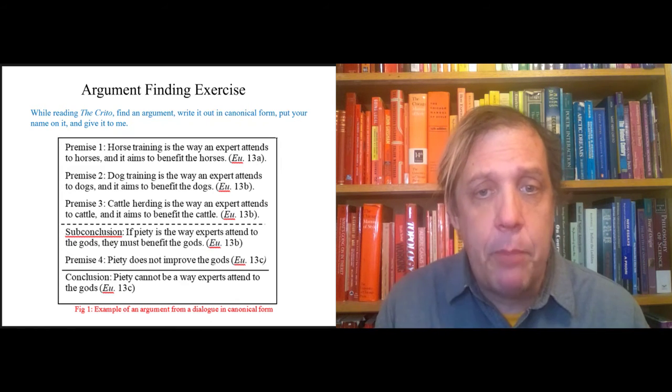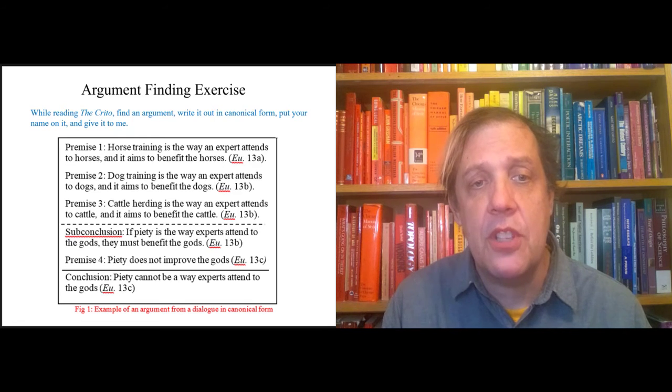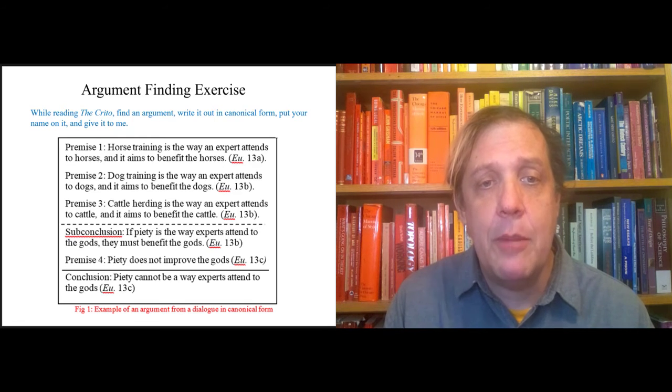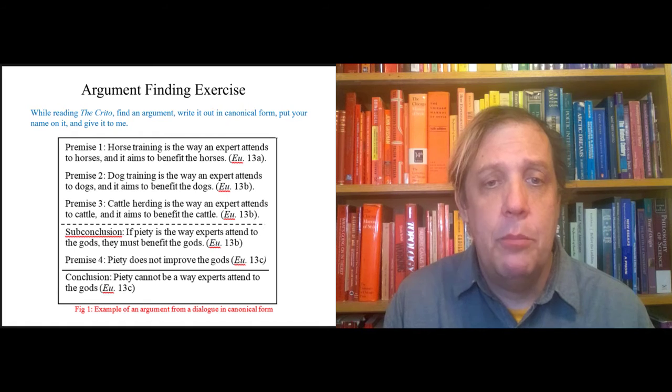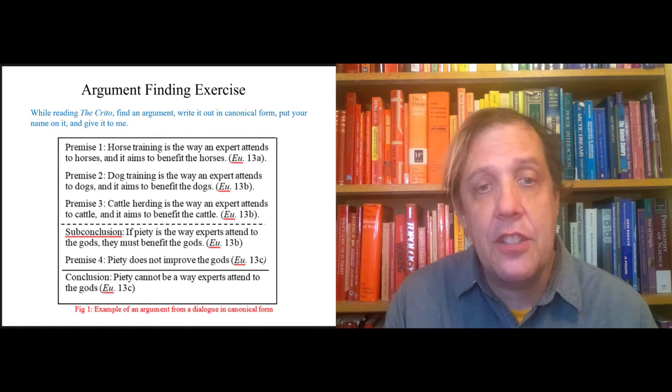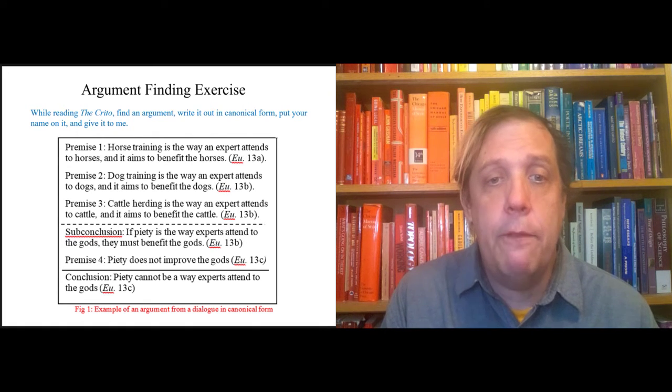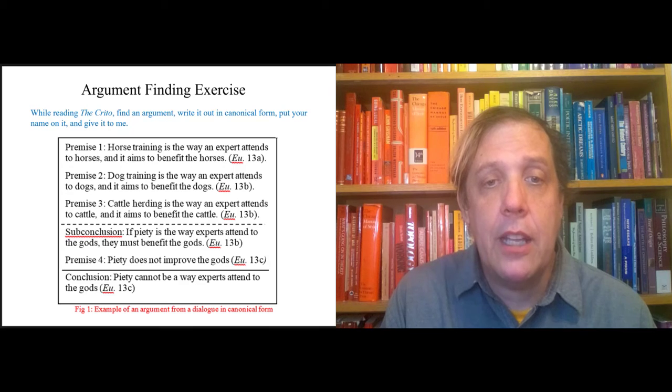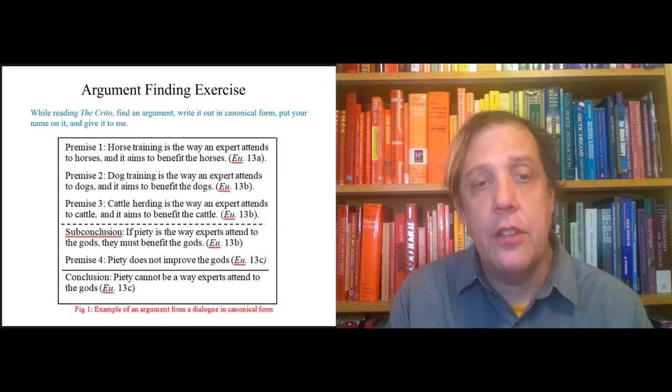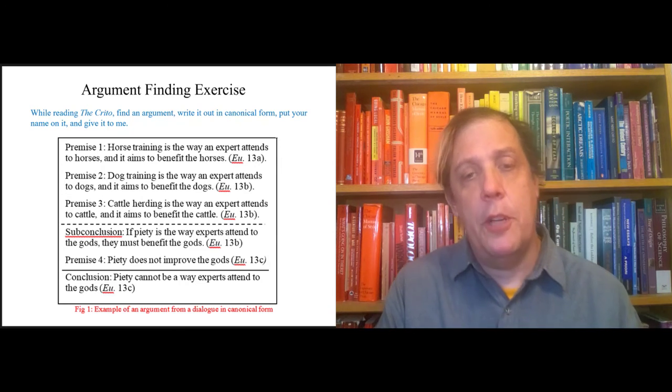Then we get an intermediate conclusion or a sub-conclusion: if piety is the way that experts attend to the gods, they must benefit the gods. But piety cannot benefit the gods because the gods are perfect. Therefore piety cannot be a way experts attend to the gods.